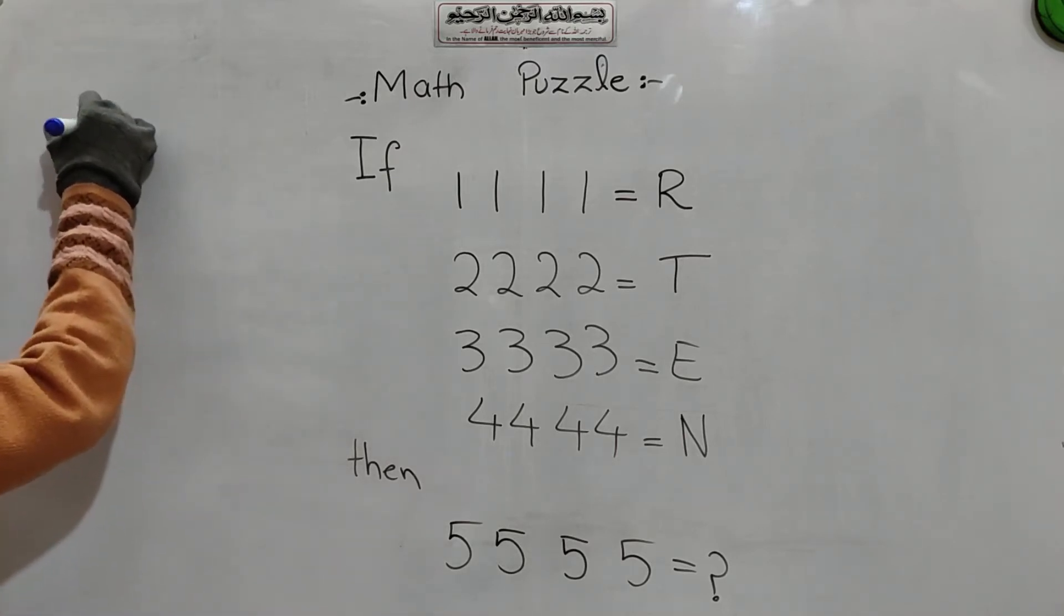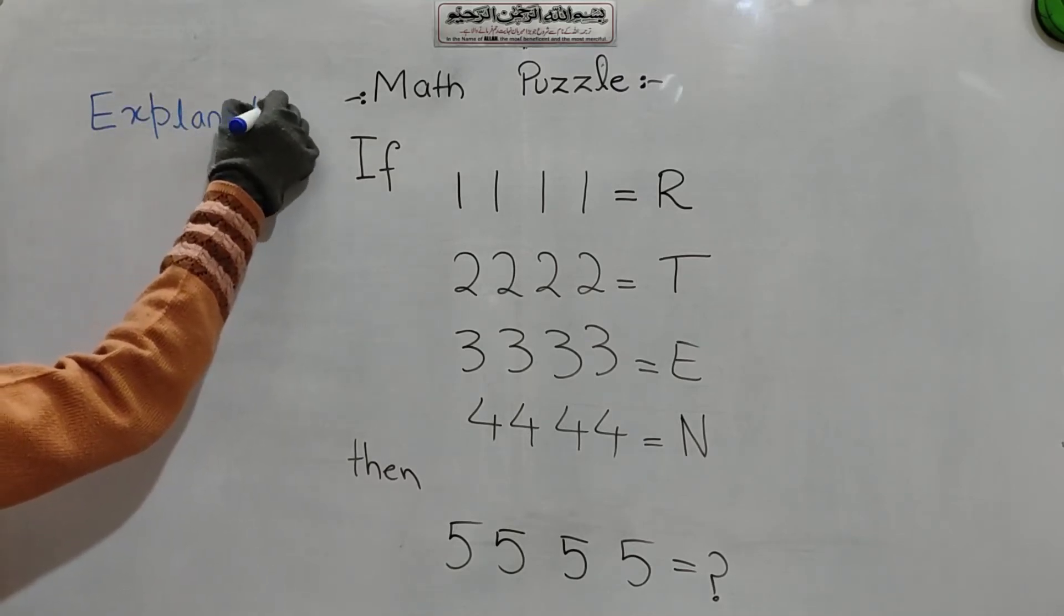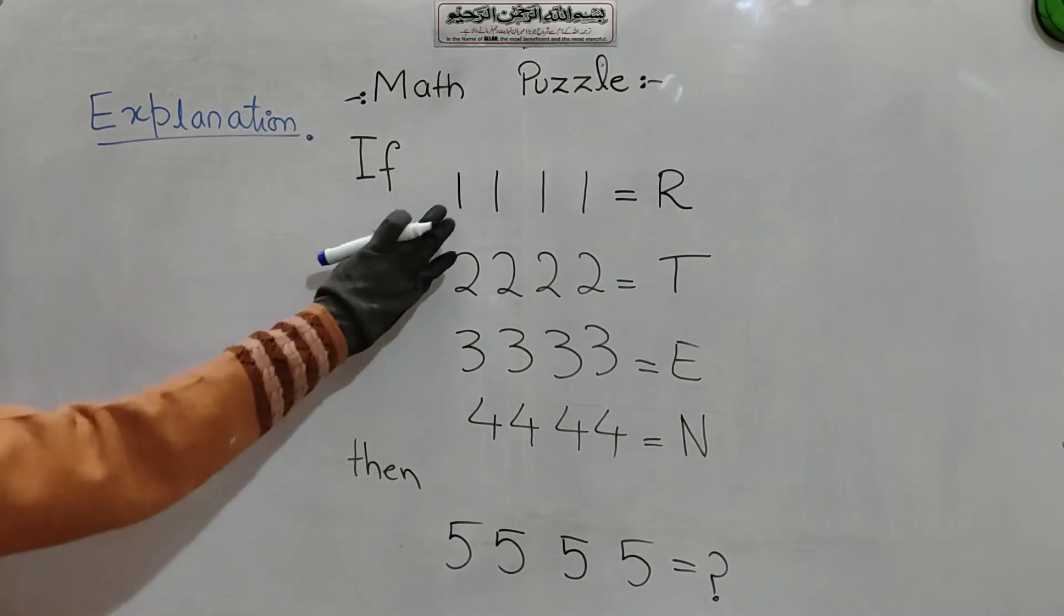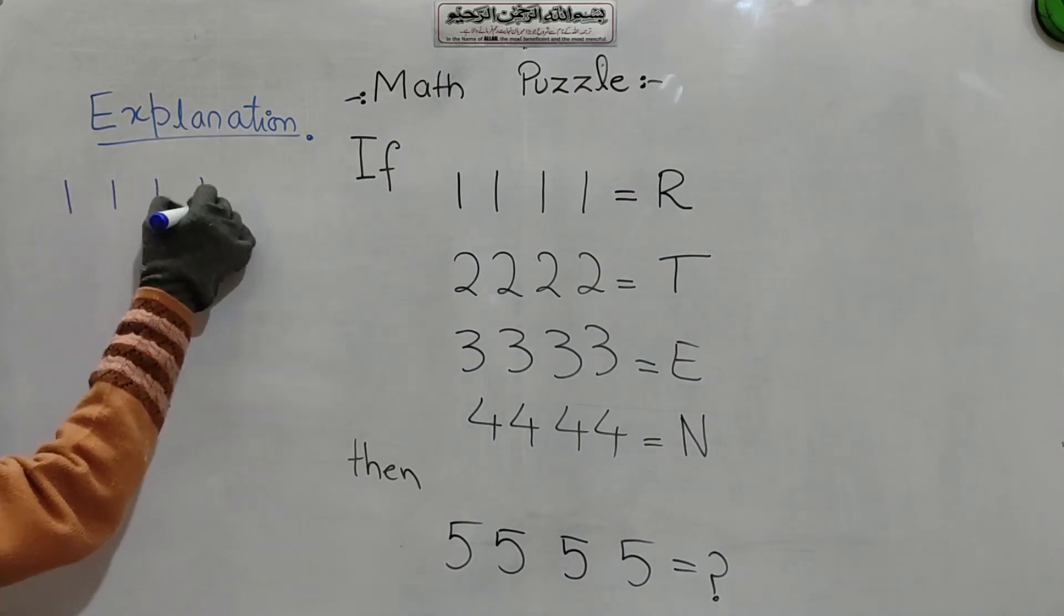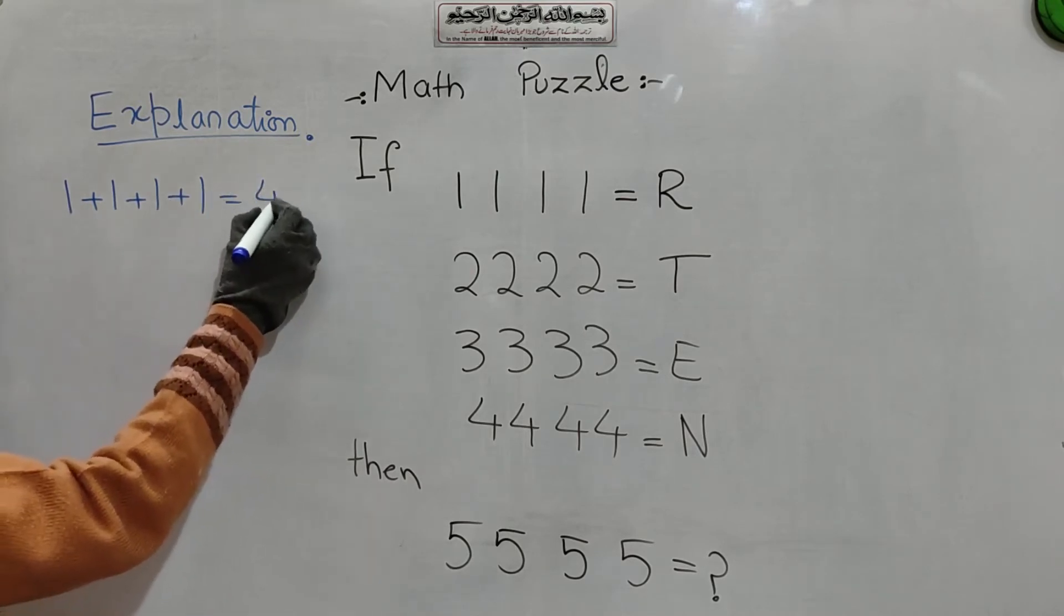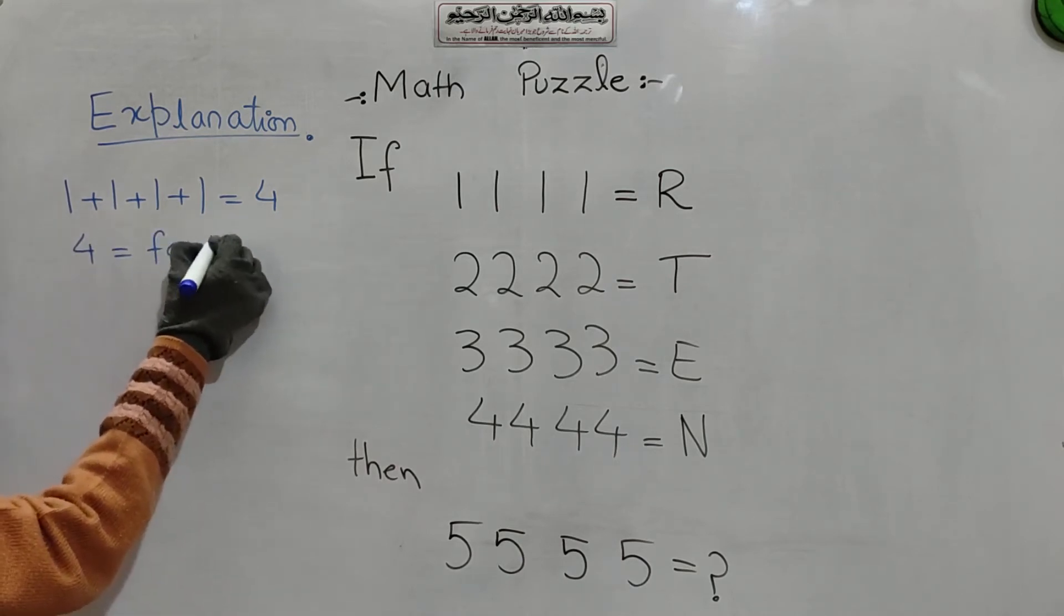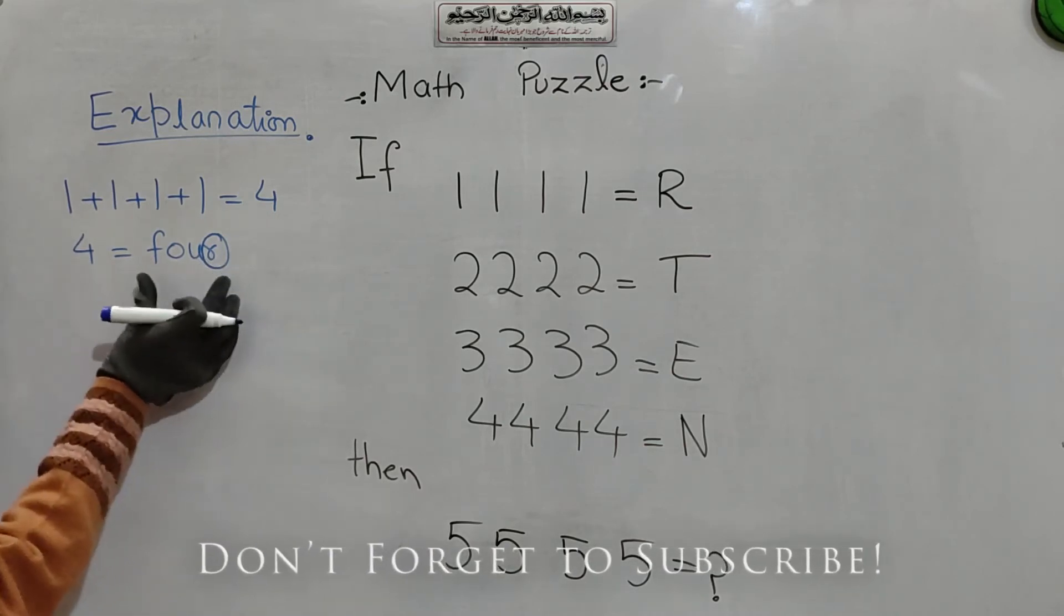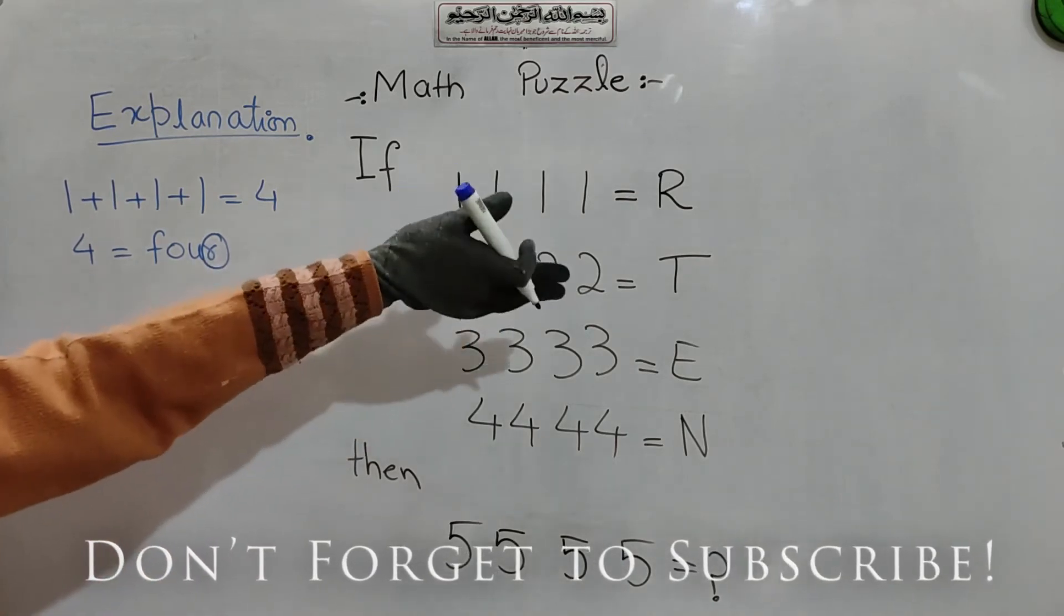See, the explanation of this math puzzle or the method or trick of this puzzle is here. 1, 1, 1, 1 is 4 times. We will add these all ones and we get 4. Now we write 4 in spelling. So 4 is equals to in spelling is F, O, U, R. We will write the last letter of this word here, which is R. So 1, 1, 1, 1 is equals to R.